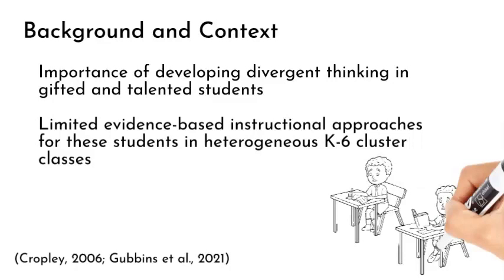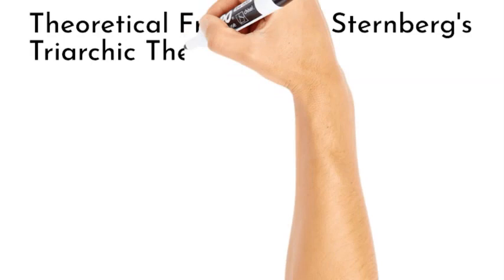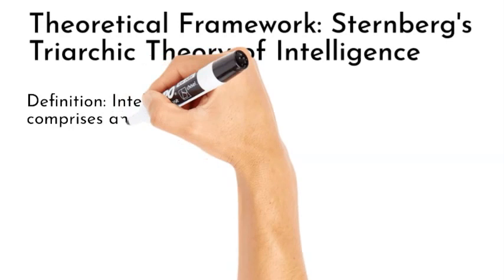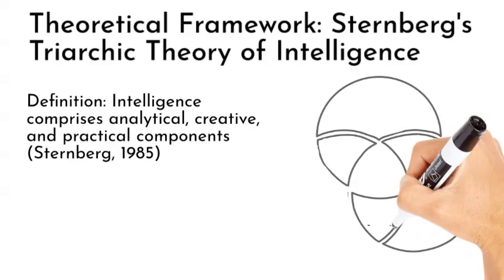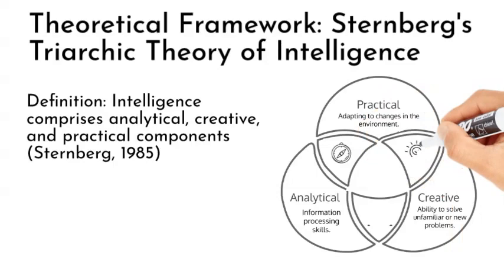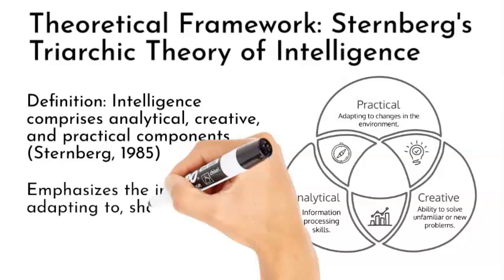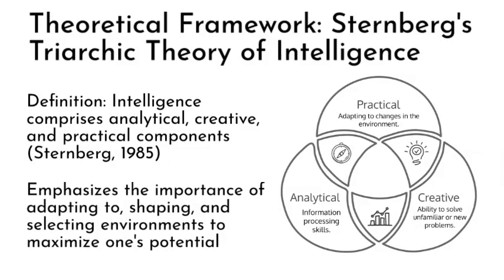Sternberg posits in the Triarchic Theory of Intelligence that intelligence comprises three main components: analytical, creative, and practical intelligence. This theory offers a more comprehensive understanding of human intelligence than traditional IQ tests and other unidimensional measures of cognitive ability. The Triarchic Theory of Intelligence emphasizes the importance of adapting to, shaping, and selecting environments to maximize one's potential, which can be applied to the context of gifted and talented students in heterogeneous K-6 cluster classes.